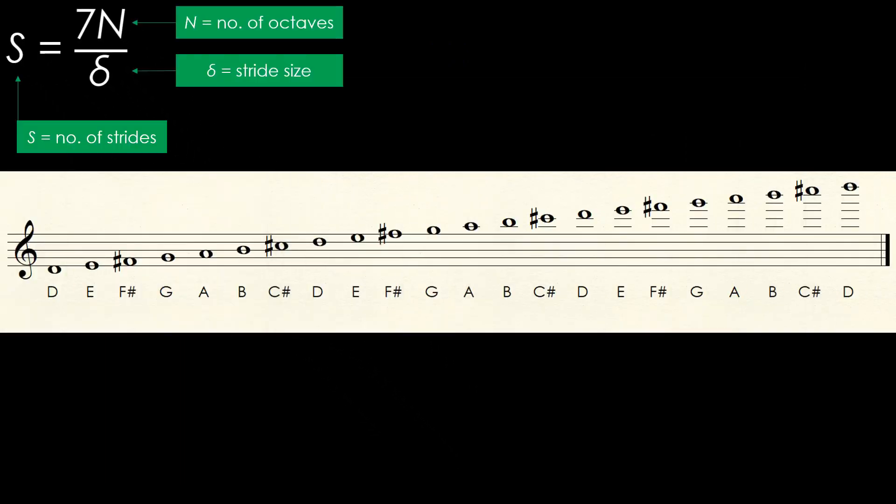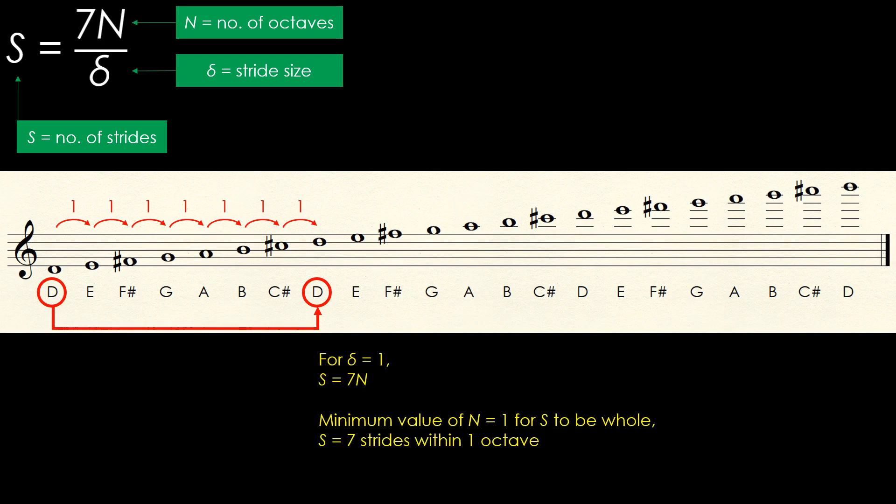Let's investigate the case where delta is 1, which is the case where we walk up the stairs one step at a time. We get s equals 7n. Since n is a whole number representing the number of octaves, 7n is therefore whole. Taking the smallest value for n as 1, we see that it takes a minimum of 7 steps to reach the starting note.